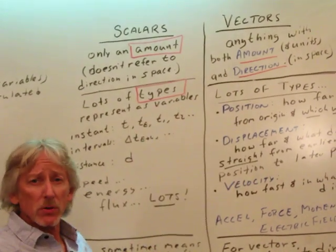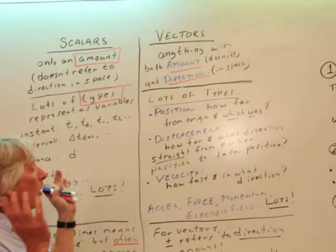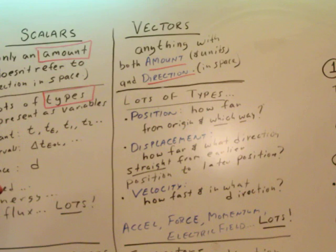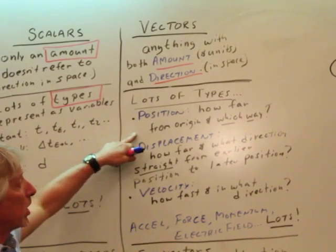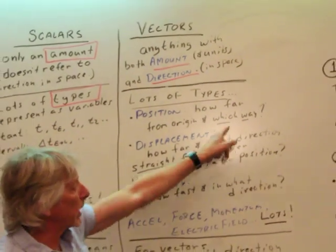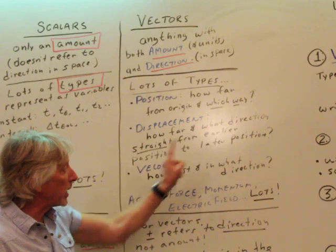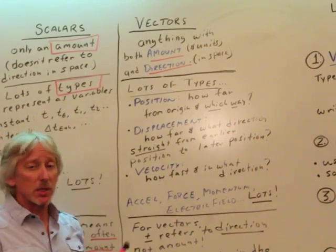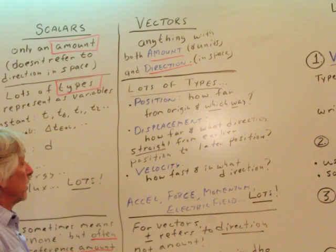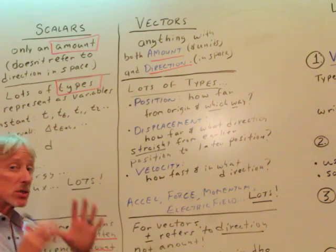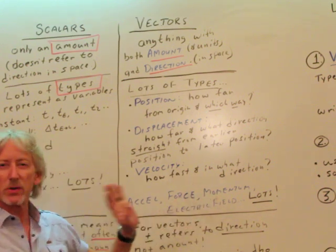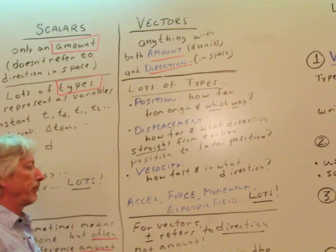So there's also lots of types of vectors. So vectors, all these vectors, anything with direction, is handled mathematically in a similar way. We use triangles, we use angles, things like that to specify the direction. So for example, position: how far from the origin, wherever you choose zero to be, and which way? Displacement: how far and what direction straight from the earlier position to the later position, independent of the path. Velocity: how fast and in what direction. Speed: just how fast. Velocity: how fast and in what direction. Acceleration, force, momentum, electric field. There's lots of vectors, but we deal with them all the same way. And that's what we have to learn.